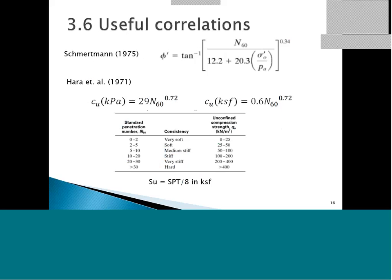There are plenty of useful correlations around. I would just like to say that I don't like the CU notation — I prefer SU. CU refers to undrained cohesion, but the reality is that SU is undrained shear strength.